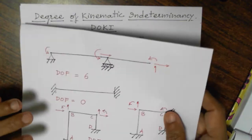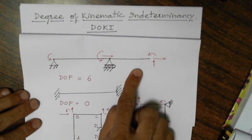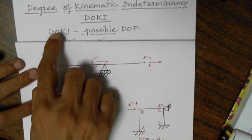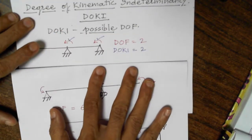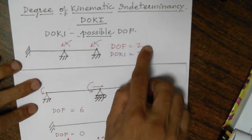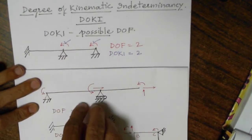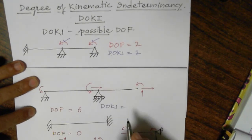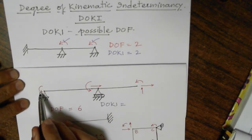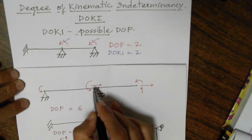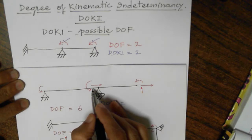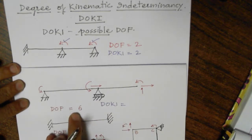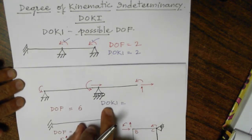Let us consider another example where degree of freedom for this structure is equal to 6. We have to find the degree of kinematic indeterminacy. For the first case, degree of freedom was 2 and degree of kinematic indeterminacy was 2. Now in this structure: rotation at one support gives 1; displacement along x and rotation about z axis at another joint gives 2 more; and at the free end all three displacements give 3 more — so 3 plus 2 plus 1, degree of freedom is 6.